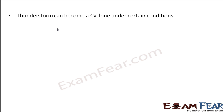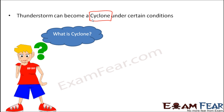These thunderstorms can become a cyclone under certain conditions. Cyclone is a more scary name — if you have ever come across news channels or newspapers, they often say that a cyclone has been reported in this area. Whenever a cyclone happens in a particular area, it causes huge destruction of life, property, and buildings. Everything gets spoiled. So cyclone is a very deadly thing. Cyclone is nothing but a severe form of thunderstorm — under certain special conditions, a thunderstorm can become a cyclone. You are probably wondering what is a cyclone and why is it so deadly.